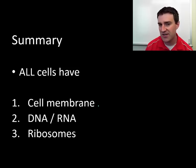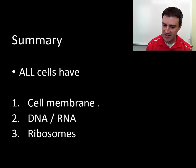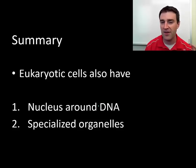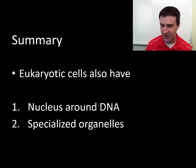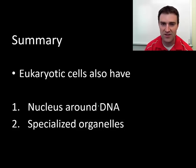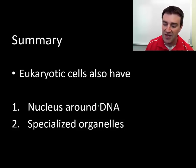So all we're really trying to do in this video is talk about the unity of life. All cells must have a membrane, DNA, RNA, and ribosomes. But there are differences between simple cells — prokaryotes — and more complex cells — eukaryotes. Two broad differences are that eukaryotes have a nucleus around their DNA and they have specialized organelles.